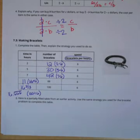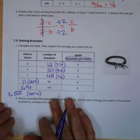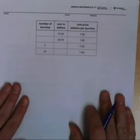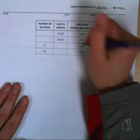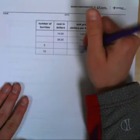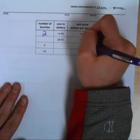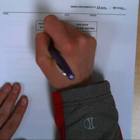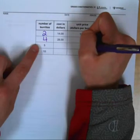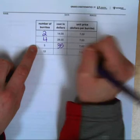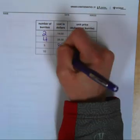Remember if I'm going too fast pause, rewind the video, watch it again. We've got another table here talking about burritos again, cost in dollars. If the burritos are seven dollars each and we paid 14 that means we bought two burritos. If our total cost was 28 that means we bought four burritos. If we bought five burritos that would be a total of 35 dollars and 10 burritos would be a cost of 70 dollars.